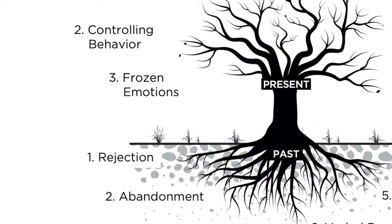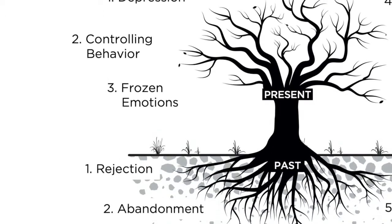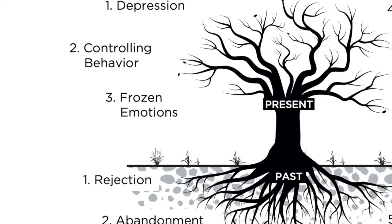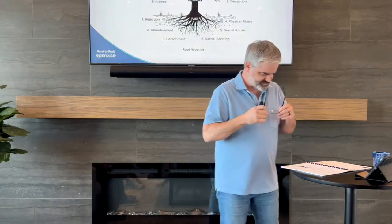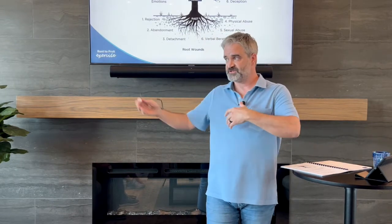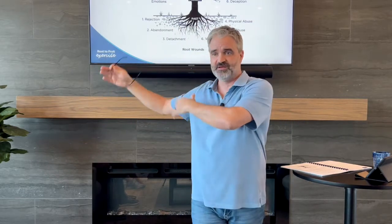Number two, abandonment. What's the fruit of abandonment? Controlling behavior. Why would I have controlling behavior if I've been abandoned? You feel out of control, like somebody's forming your world for you. When I get older, I control things so that I don't get abandoned again. I'm going to set the stage so nobody else can mess with the pieces. It makes sense. There are all kinds of fruit that can come from abandonment — a little girl could be promiscuous or look for value from men. We can look for value from other people where we've been missing it in our past. It depends on what we do with it in our hearts.